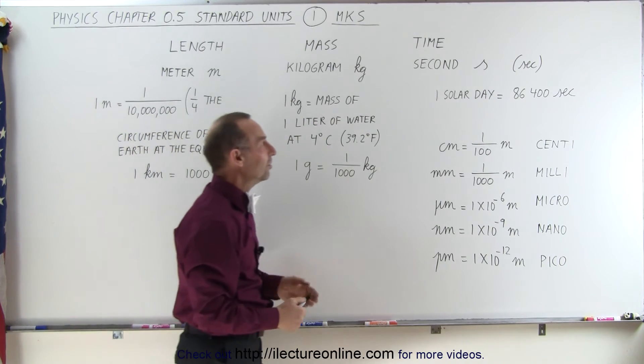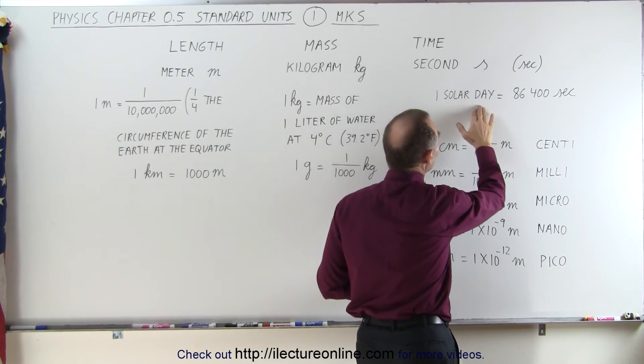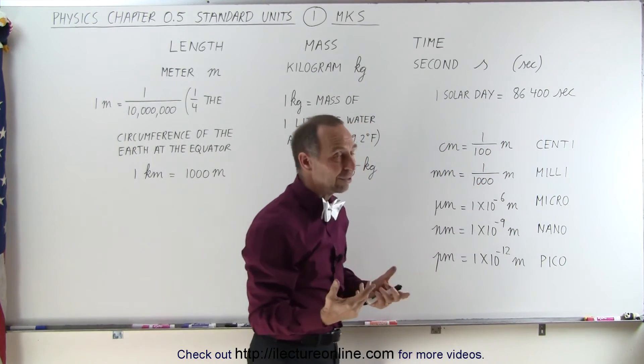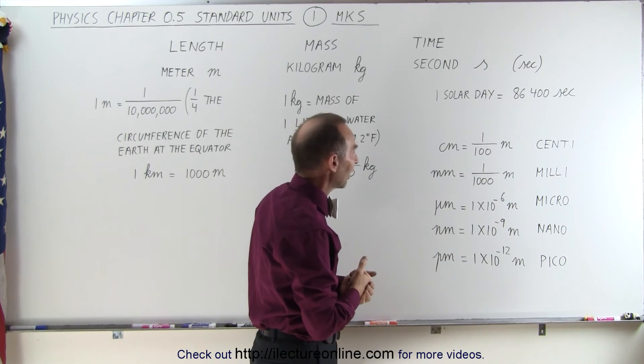Time is in seconds, and we define a second by saying that one complete solar day has 86,400 seconds. So, if we take a complete solar day, we divide by 86,400, we have one second.